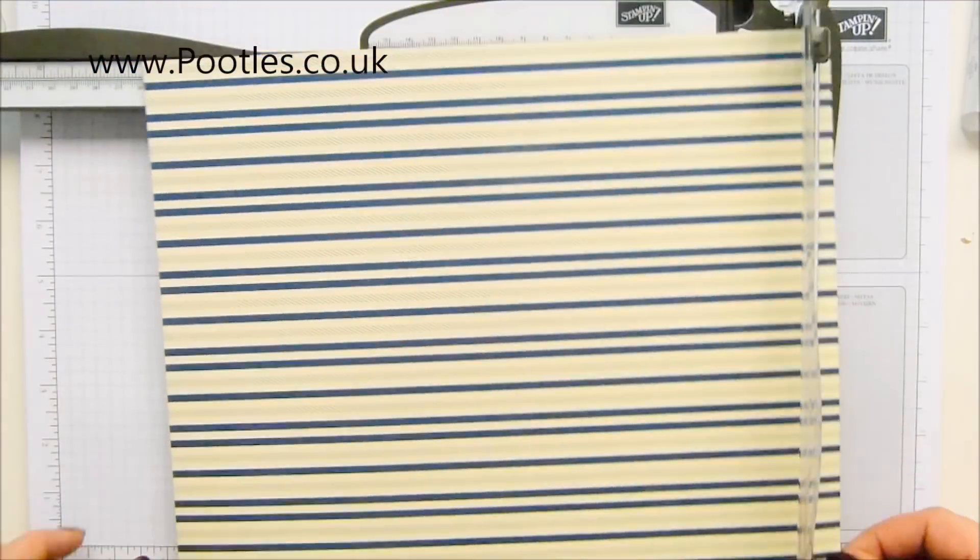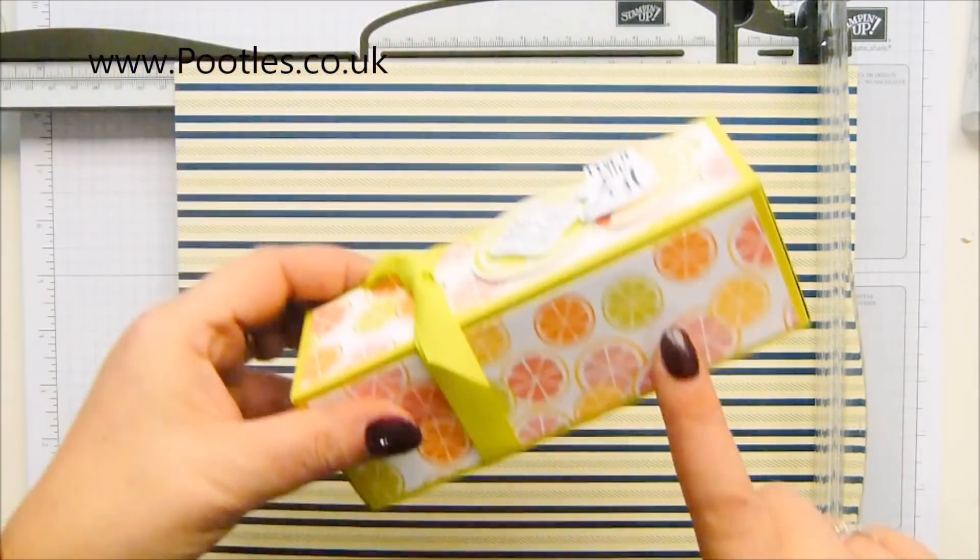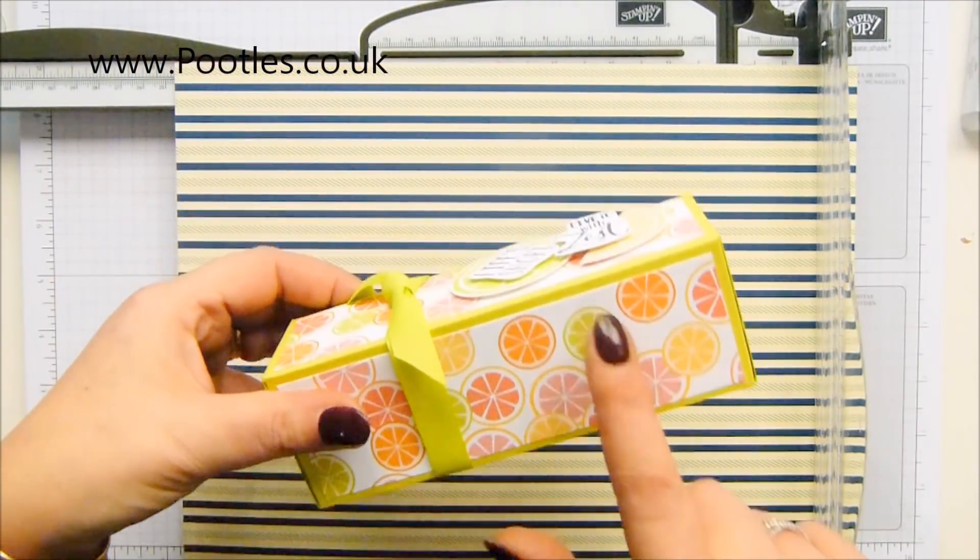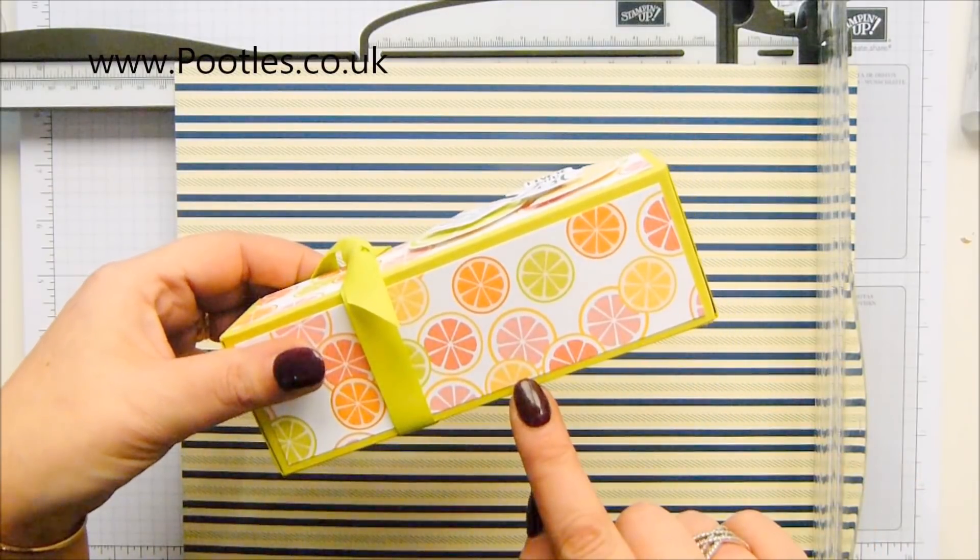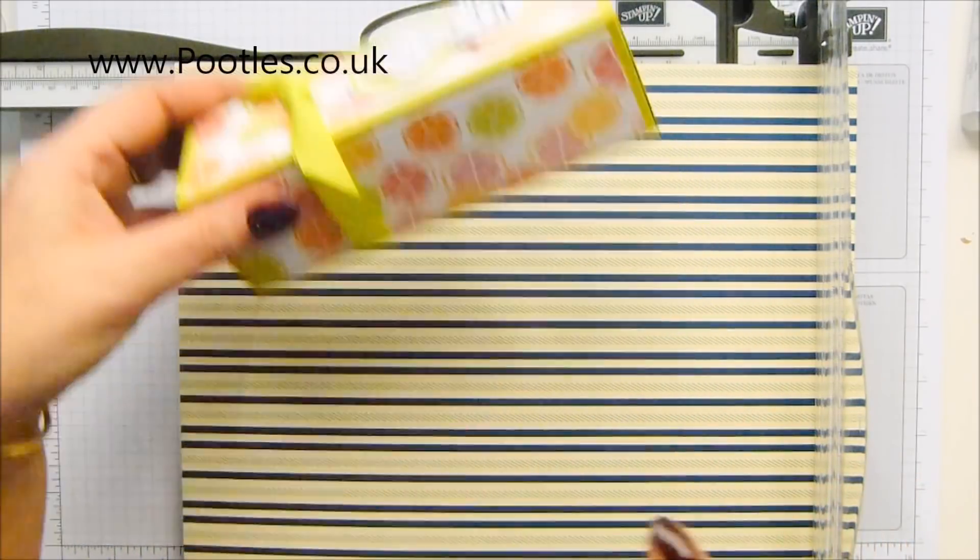We need four pieces of DSP for on here: 5 and three quarters of an inch long by 1 and three quarters of an inch wide. So that's 15 and a half by 4 and a half centimeters.